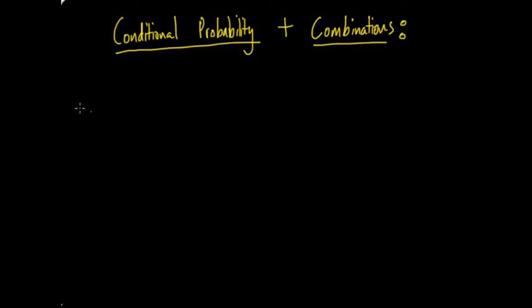So to begin, conditional probability — what is it? In words, conditional probability is basically the probability of something given that something else has occurred. This is a much more real-life scenario compared to other probability questions. For example, the probability of passing a test given that you passed the last test, or the probability of passing a test given that you failed the previous one.